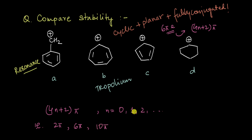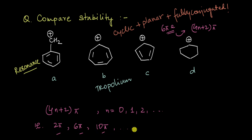Or 10, if we put n equal to 2. So if the total number of pi electrons that are getting delocalized in a cyclic, planar and fully conjugated system is either 2, 6, 10 and so on, then the compound actually turns out to be aromatic. And aromatic systems are extra stable.